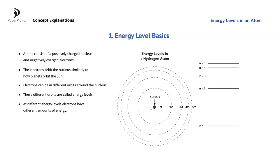Let's add these energy amounts to our diagram. Since we are dealing with very small amounts of energy, the unit we use here is the electron volt. The first energy level, where n is equal to 1, is also called the ground state. When an electron moves from the ground state to another energy level, we say that the electron becomes excited. Therefore, the second energy level, where n equals 2, is called the first excited state; the third energy level is called the second excited state, and so on.